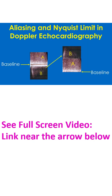This is a diagrammatic representation of what happens when the baseline of the Doppler tracing is shifted downwards. The portion of the AR jet which was below the baseline gets shifted to the cutoff portion of the AR jet above the baseline. A similar change occurs if the maximum velocity setting is changed as well.